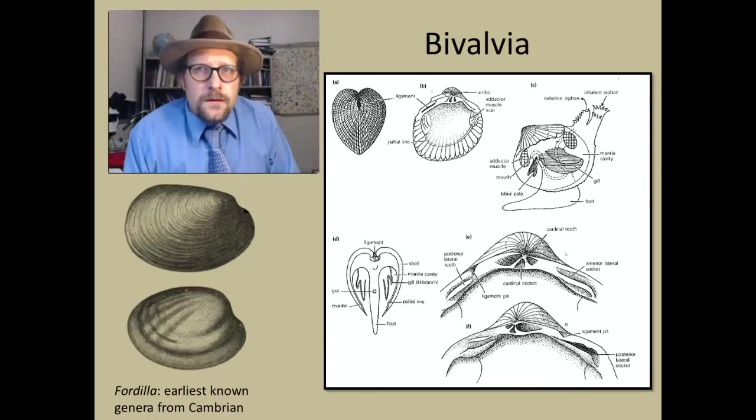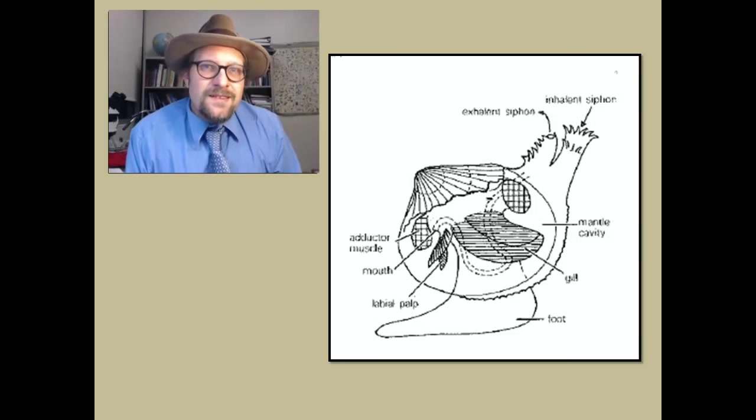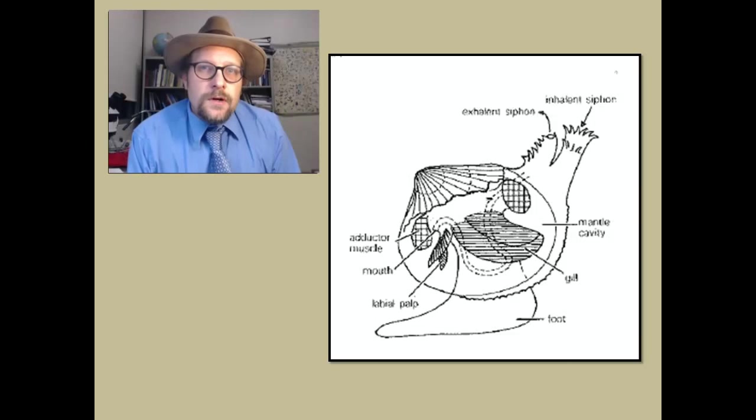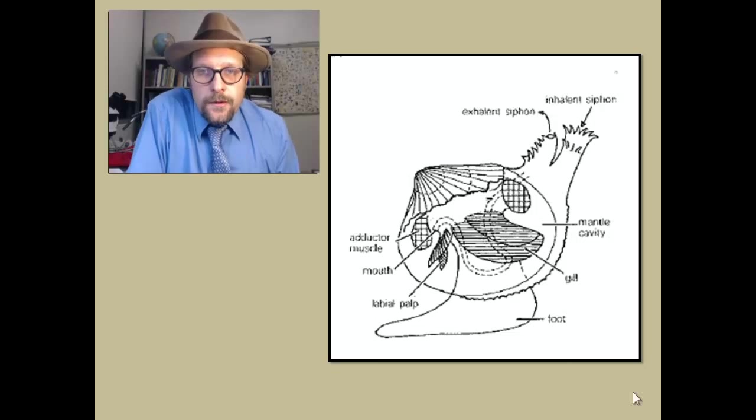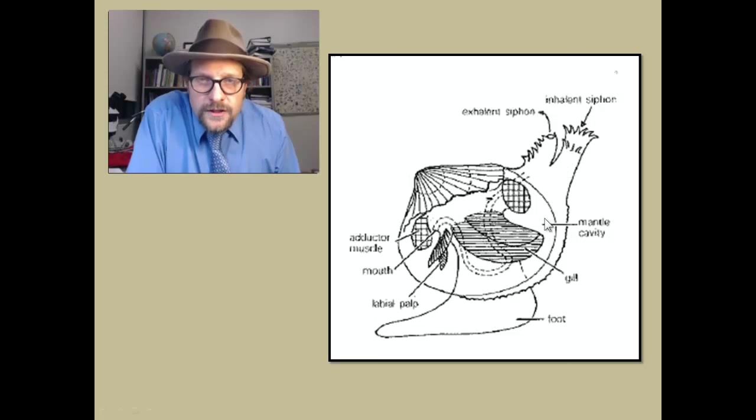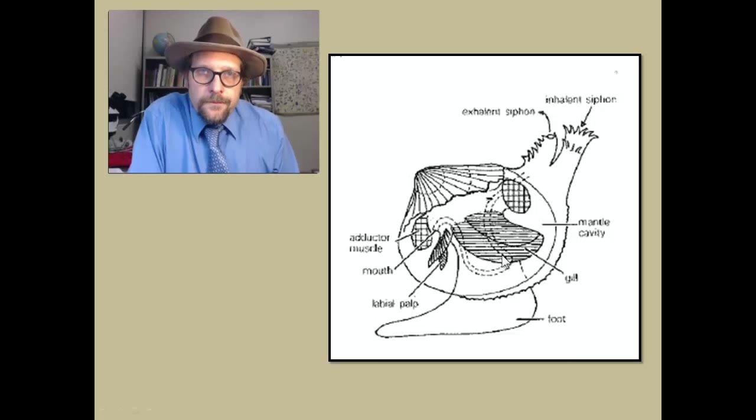Bivalves have a fleshy foot and extend a siphon out of the shell. Bivalves can make a living by siphoning in detritus and food into the mantle cavity, and filtering through a series of labial palps into a mouth. Paired gills also hang out in the mantle cavity in rushing incoming water. This provides lots of oxygen to the shelled organism. The exhalant siphon expels the waste out of a separate opening for the anus.